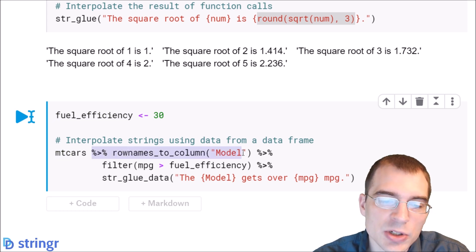We're going to use the mtcars data set. First, we're piping it to this function to extract the row names into a column called model. Then we're going to filter down to only those records that have a mpg value greater than the threshold that we set. So these are only going to be fuel efficient cars that have better than 30 mpg.